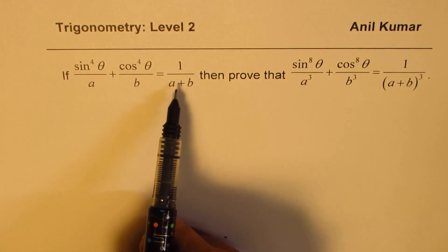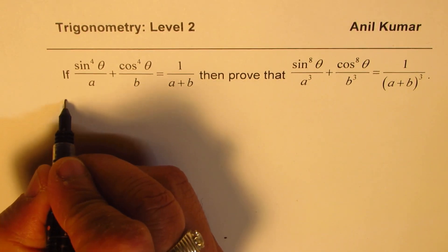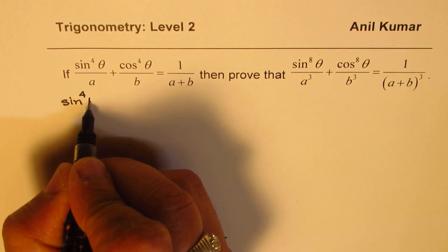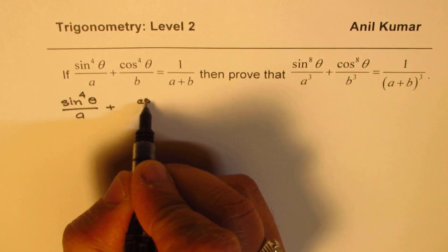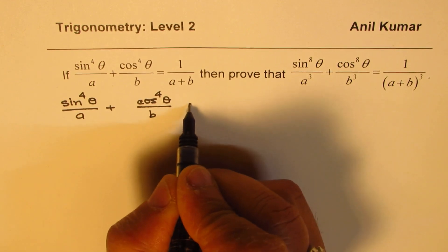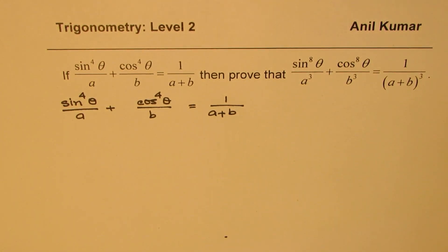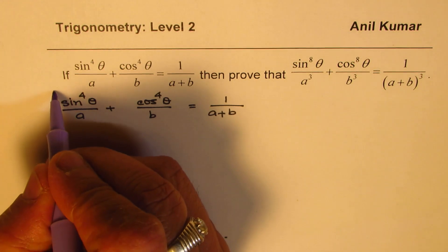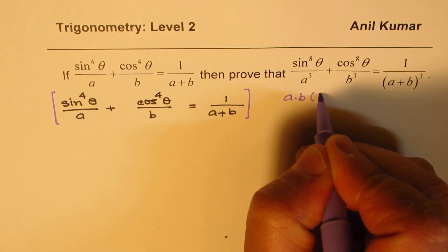So let's work with what is given to us and then we'll try to prove that particular thing. We are given that sine to the power of 4 theta over a plus cos to the power of 4 theta over b is equal to 1 over a plus b. In the first step, let's get rid of the denominator. We'll multiply all the terms by a times b times a plus b.